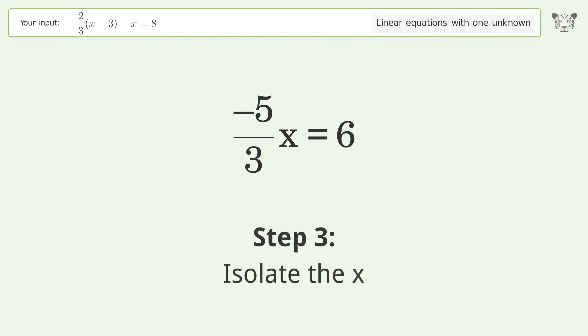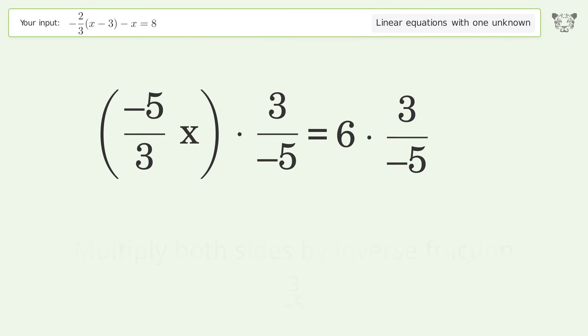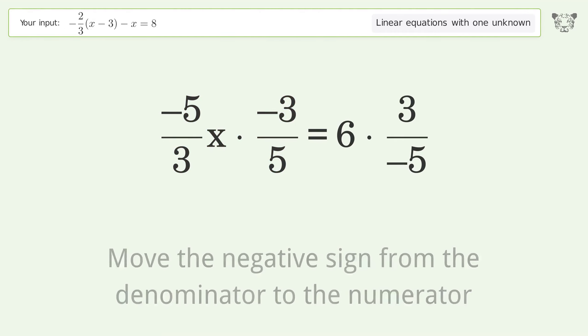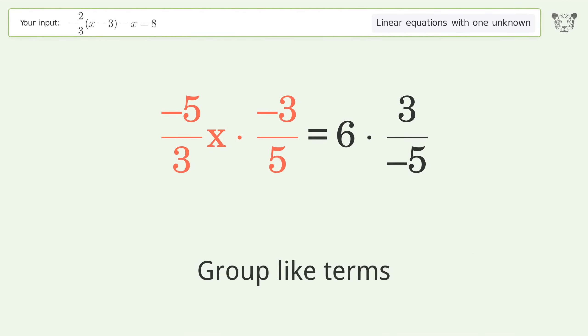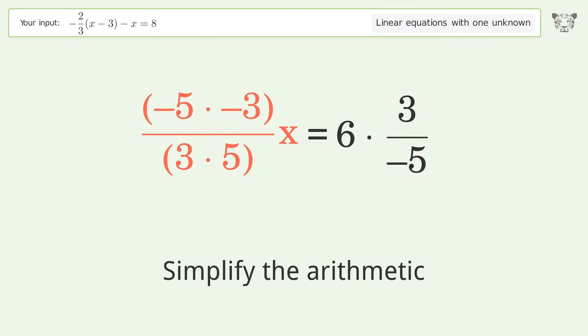Isolate the x by multiplying both sides by the inverse fraction, 3 over negative 5. Move the negative sign from the denominator to the numerator. Group like terms, multiply the coefficients, and simplify the arithmetic.